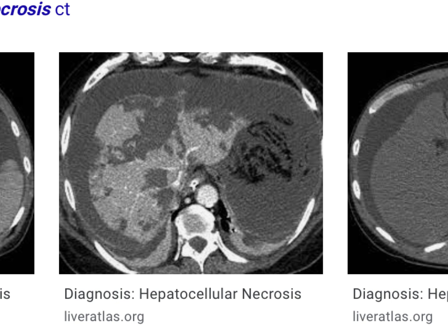Outcome two is that the individual might actually survive the hepatonecrosis, but then go on to die from secondary liver failure. Even though the individual has managed to survive the death of the liver, the liver hasn't managed to survive. The liver has died, and not enough liver tissue is left for them to have a functional liver, so they then get liver failure. Liver failure is fatal as well — it's just fatal much slower.